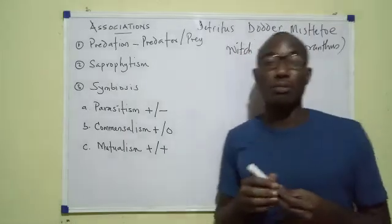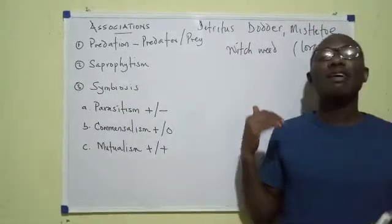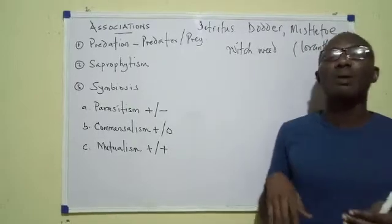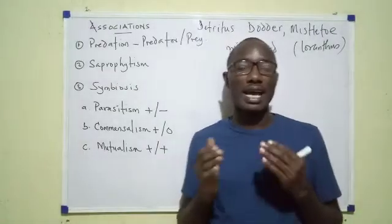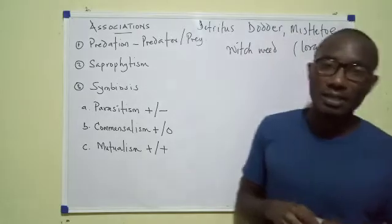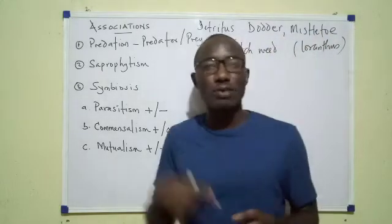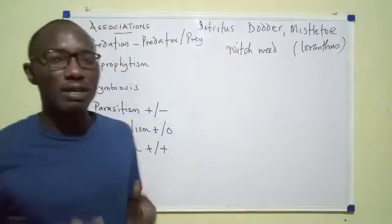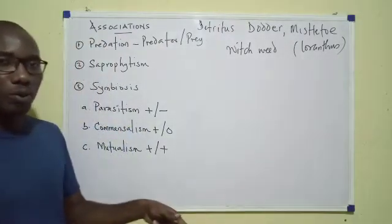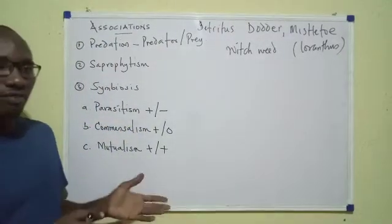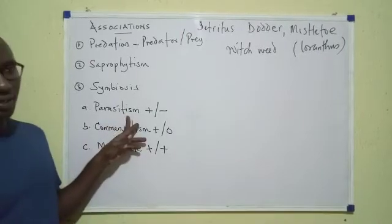For endoparasites, think of the worms. There are different worms that are endoparasites: roundworms, hookworm, pinworm, threadworm, and even the flukes. Flukes are flatworms — like the tapeworm, which is also a flatworm. Blood flukes and liver flukes are also worms and endoparasites.